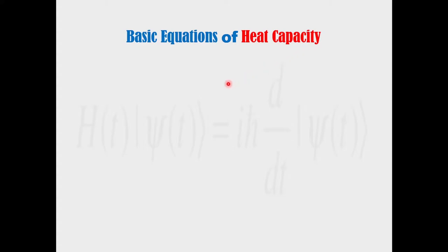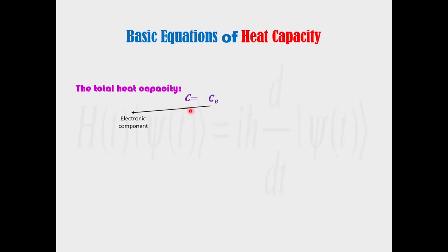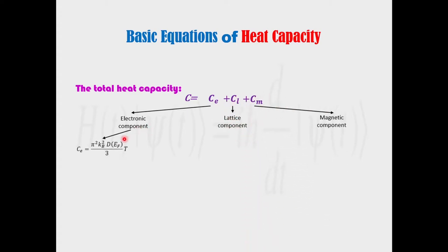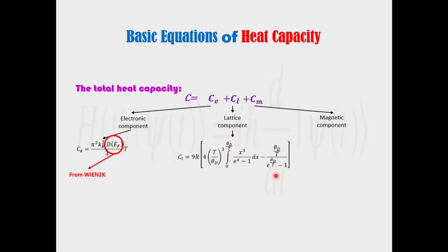The basic equation of heat capacity. The total heat capacity has three terms: the electronic component term, the lattice component term, and the magnetic component. The electronic component is given by this equation, for which the density of states at Fermi level energy is needed — we obtain it from the WIEN2k code. The lattice component is given by this equation, which depends on the Debye temperature that we can obtain from this equation in terms of the mean velocity of the wave.